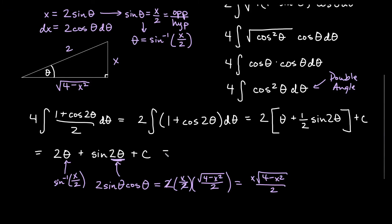Let's replace everything and say what we have. So here I have 2 times the inverse sine of x over 2 plus x times my root 4 minus x squared over 2, all of that plus c.